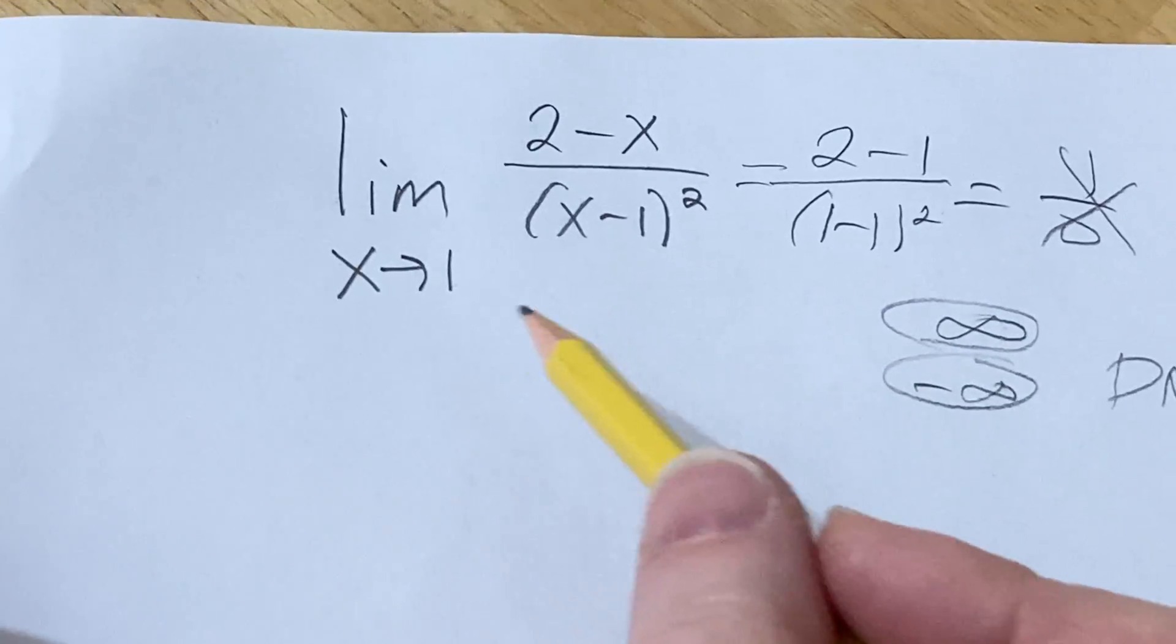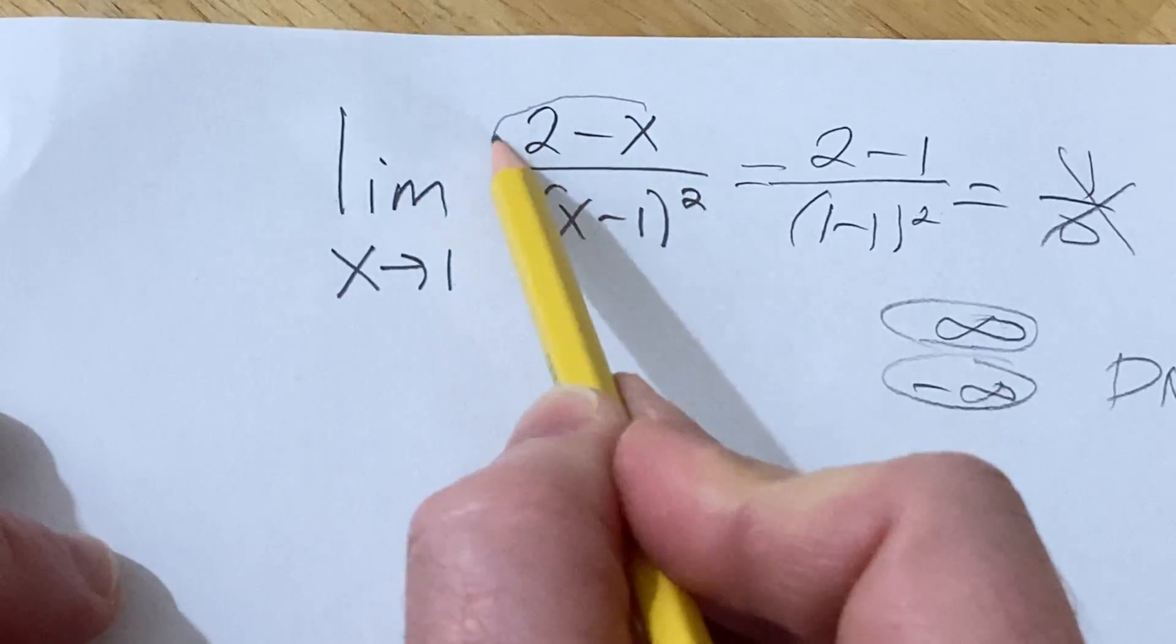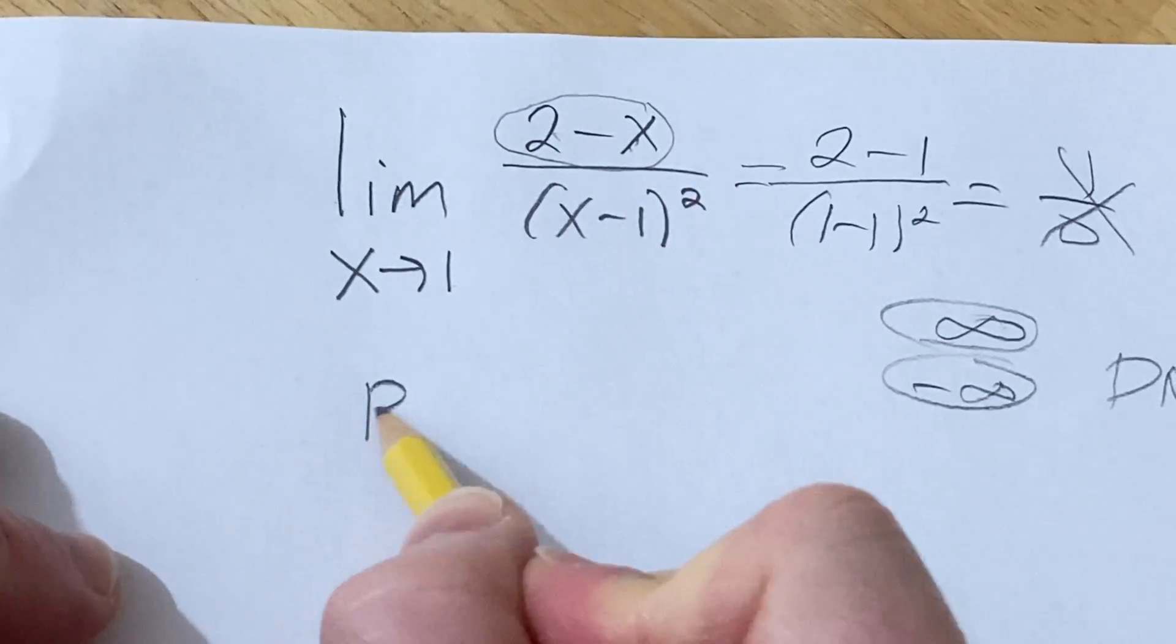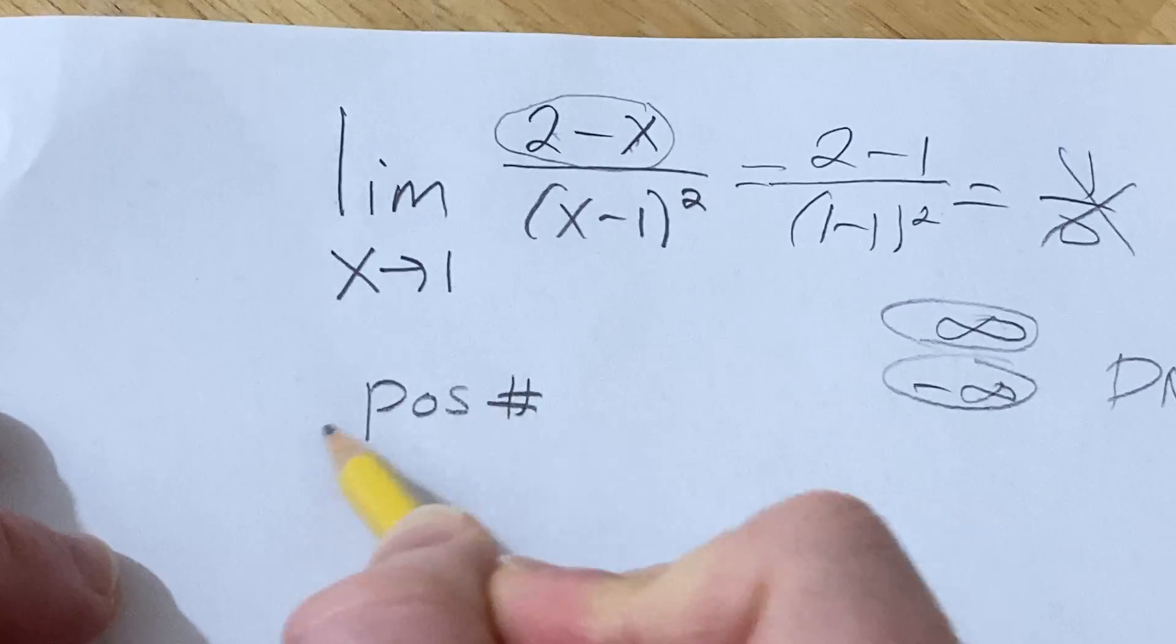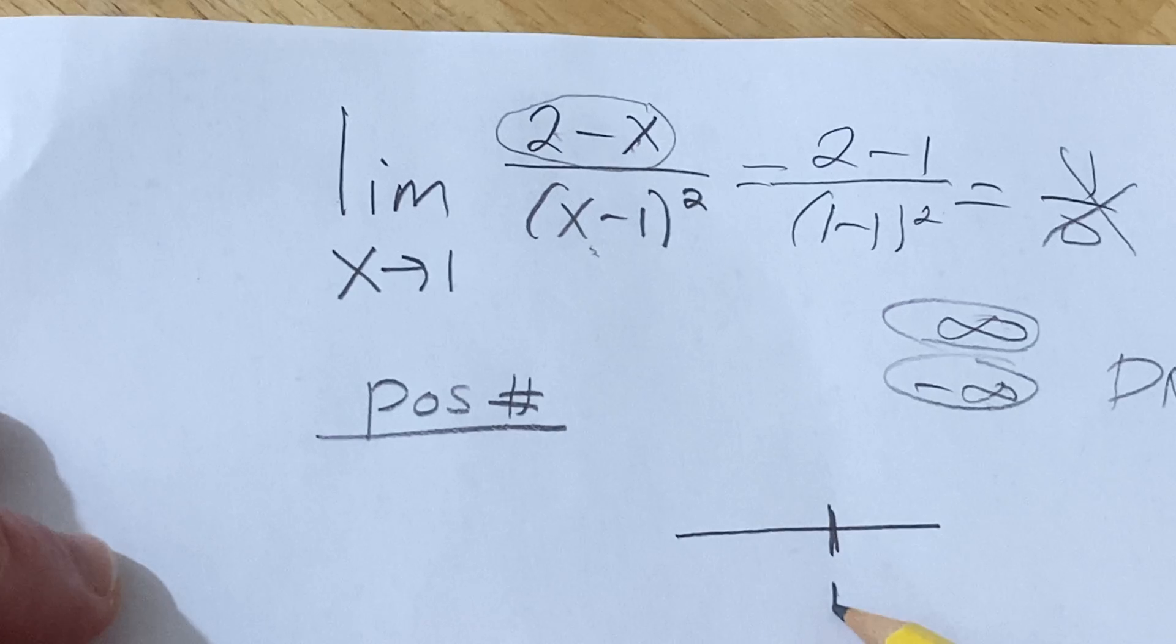So let's go ahead and just see what happens intuitively here. So intuitively, in the numerator you've got 2 minus 1, which is basically 1, so you're going to have a positive number in the numerator. In the denominator you're approaching 1. So here's a 1 on the number line, and then you're squaring the result.